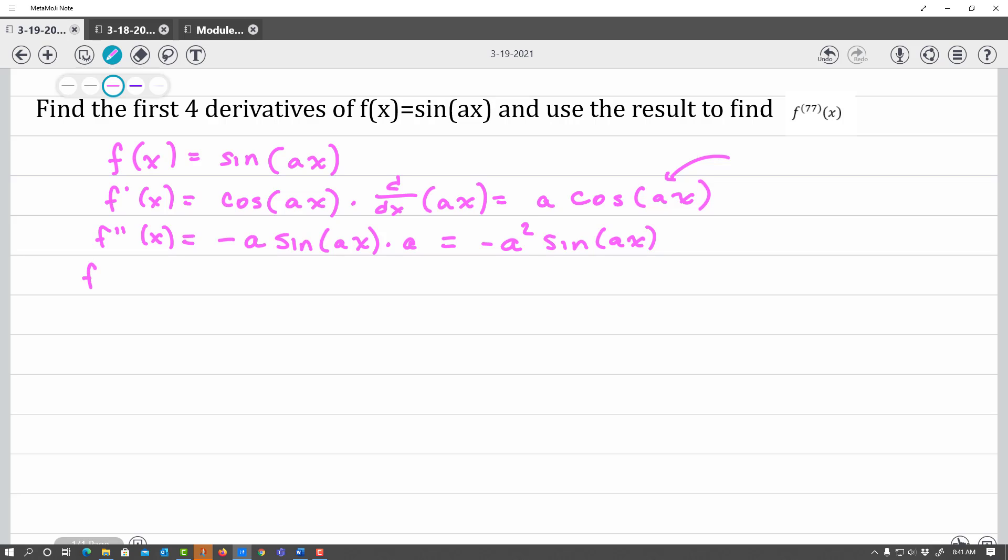If I want to find the third derivative, the derivative of sine is cosine. I have a squared already, and when I take the derivative of the inside again, the negative comes down. When I do the chain rule again, I get negative a cubed cosine ax. You can probably already see the pattern.